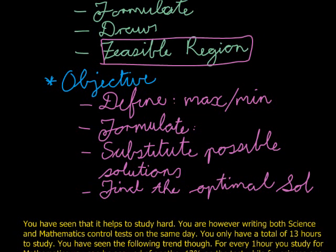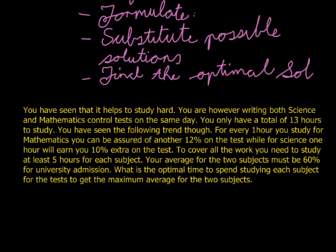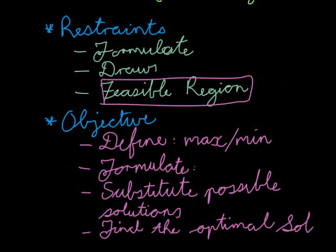So basically, we have our restraints, objectives. For the restraints, we formulate, draw, find the feasible region. But then we go into the objective. We define what are we trying to do, maximize or minimize. Formulate a formula to maximize and minimize. Then substitute in the possible solutions that are given by the feasible region. And then finally, find the solution or the value that is the maximum or minimum.